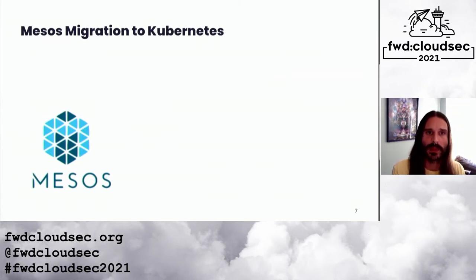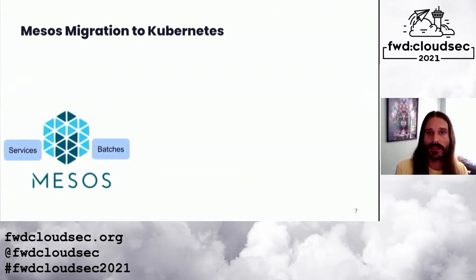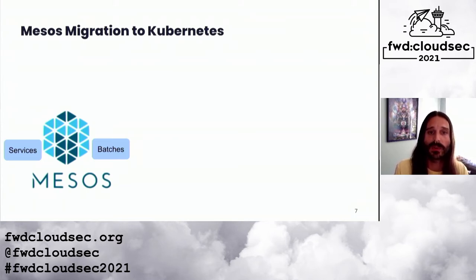We weren't always using Kubernetes — it's a relatively new technology for us at Yelp. As early adopters to the containerized workload scene, we had been using Mesos as our container orchestration framework since 2014. Our Mesos infrastructure was primarily used for running services and batch workloads in containers. We didn't really have a strong need for fine-grained access control because only the infrastructure team needed to interact with Mesos directly, using shared secrets with administrative privileges.